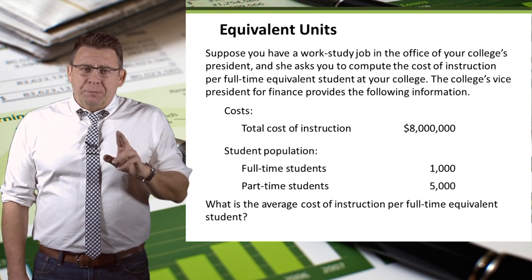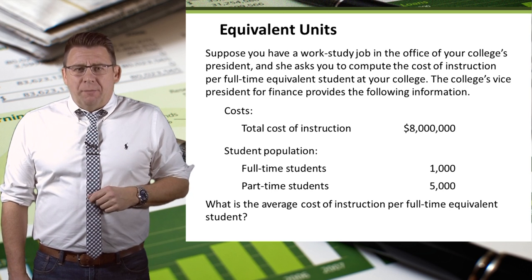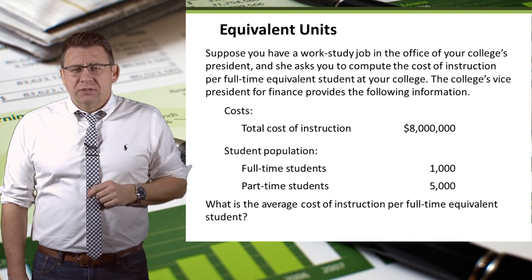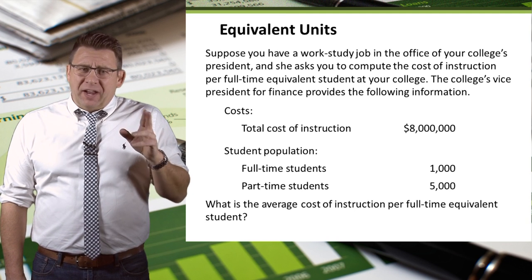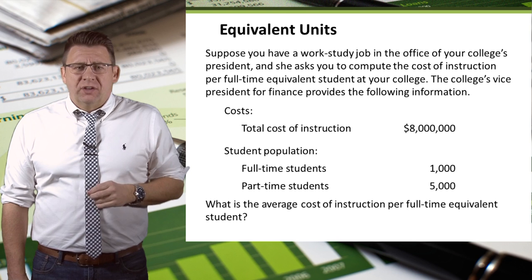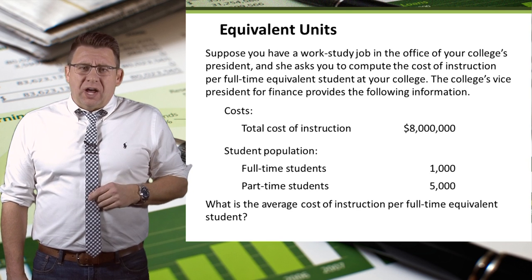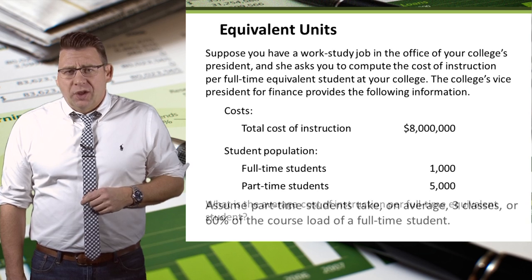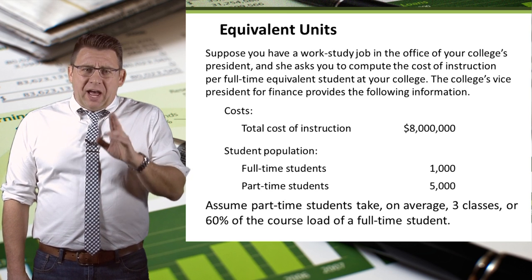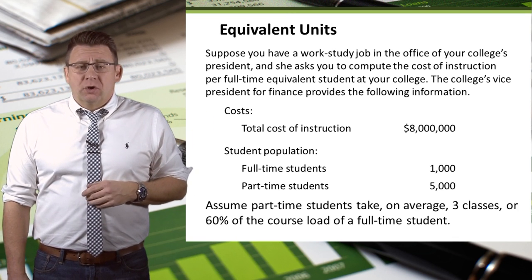Calculating equivalent units is an important part of process costing. Suppose you have a work-study job at the college and the college president asks you to compute the cost of instruction per full-time equivalent student. The total cost of instruction is $8 million. The college has 1,000 full-time students and 5,000 part-time students. We need to know, on average, how many classes part-time students take. Let's assume they take three classes, which would be 60% of the course load of full-time students.